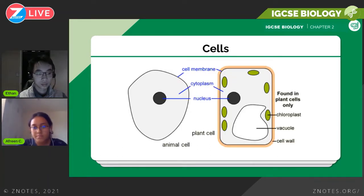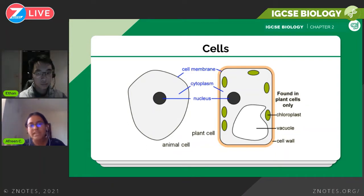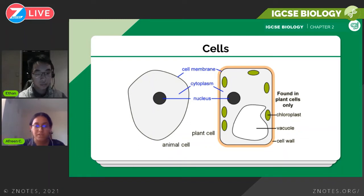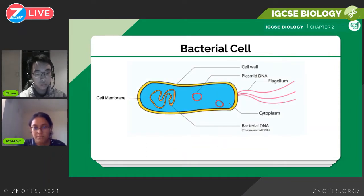Here's a diagram. The ones in blue are the common cell organelles — there are also ribosomes and mitochondria, though not labelled here. So ribosomes, mitochondria, cell membrane, cytoplasm, and nucleus are in common. Plant cells exclusively have chloroplast, vacuole, and cell wall. You need to know the functions of each of those organelles.